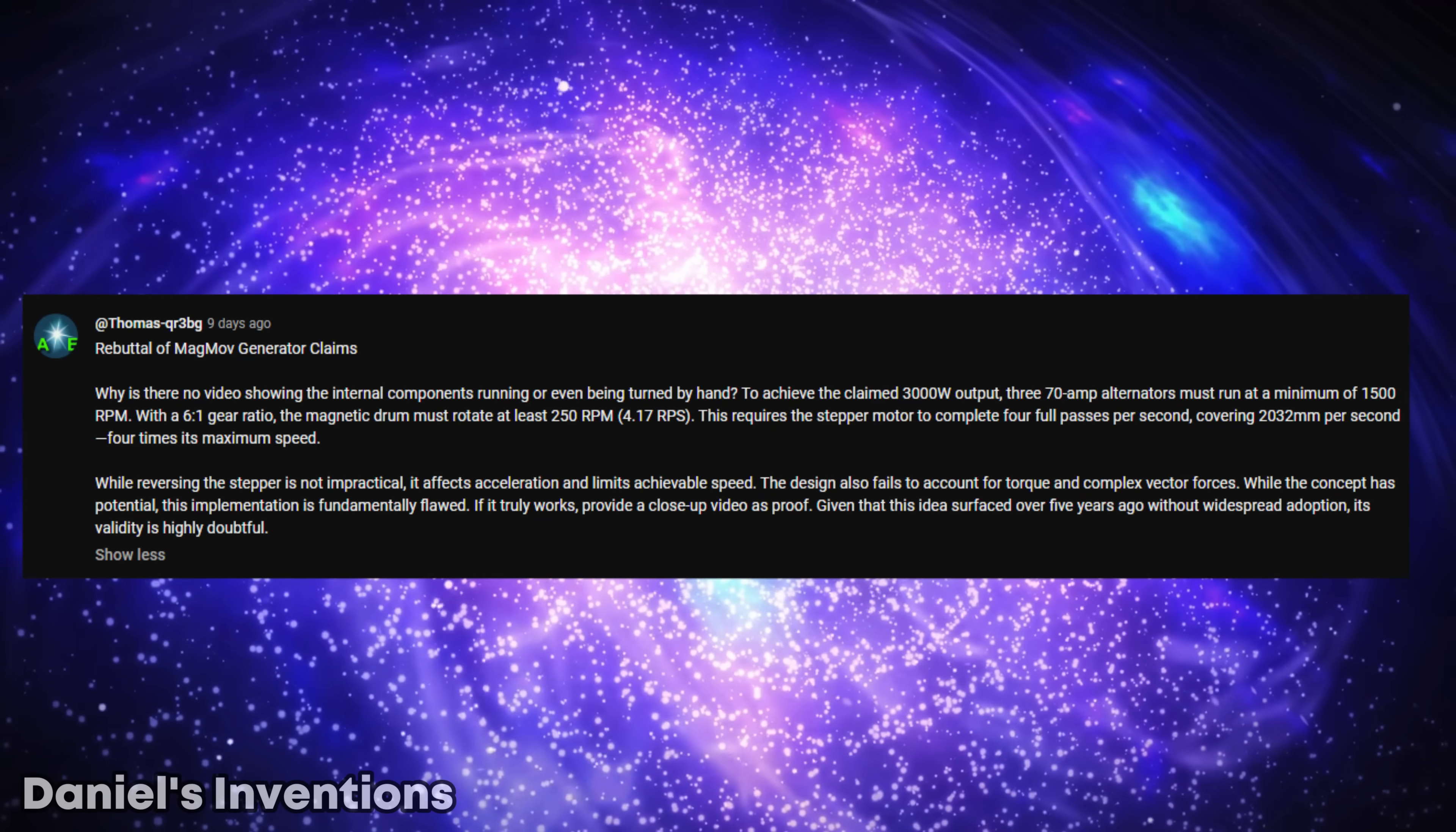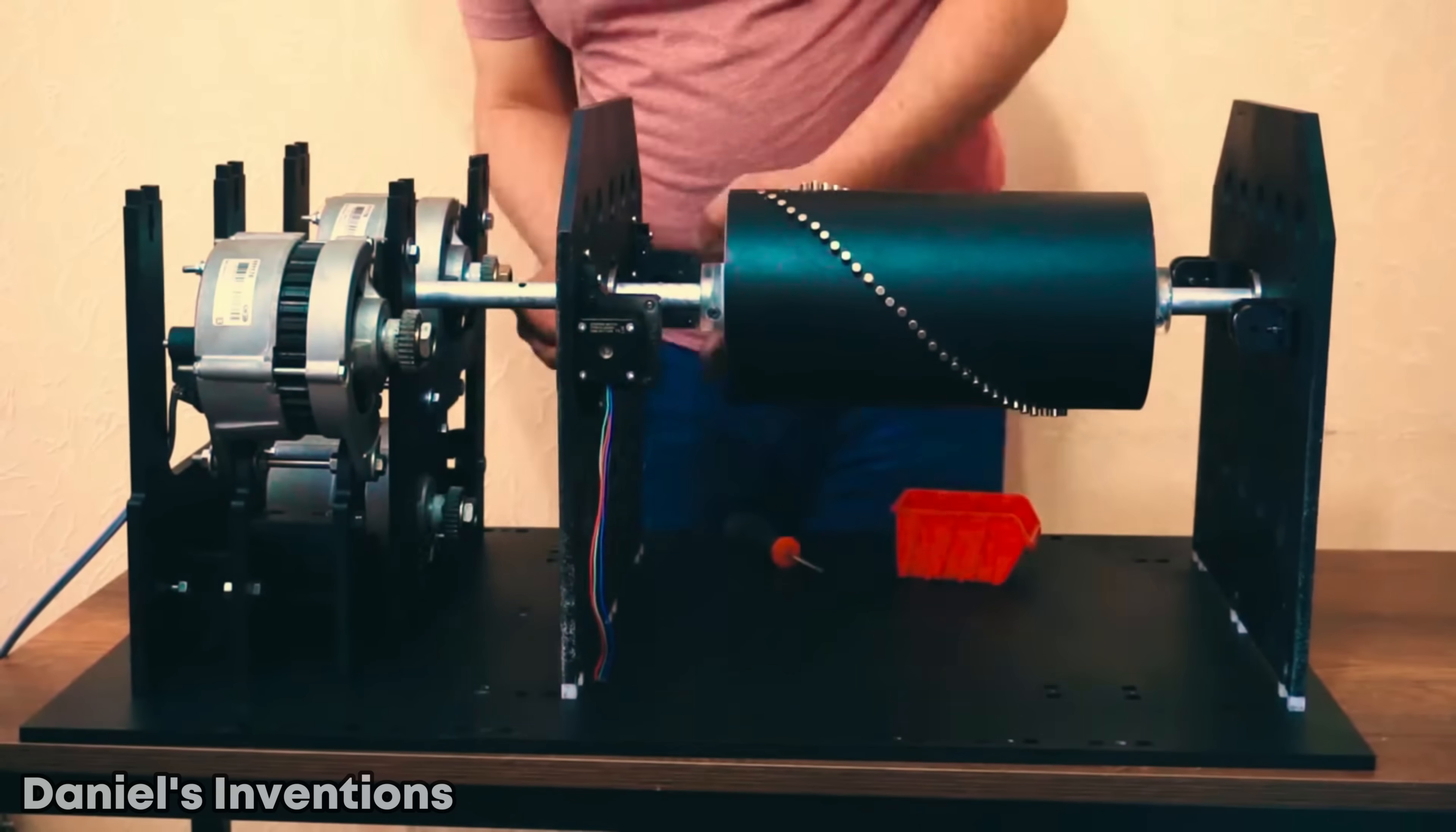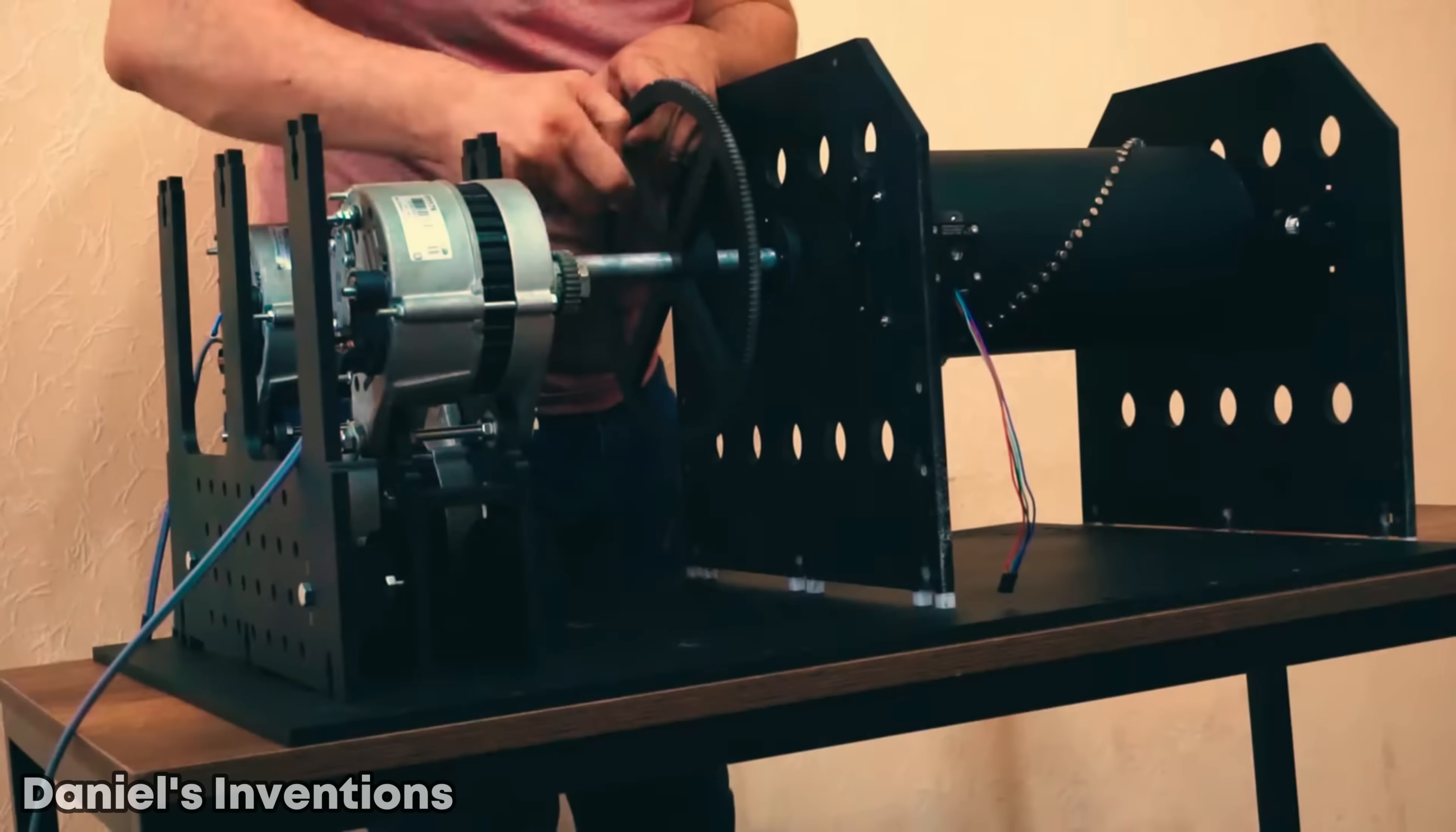A comment on the original inventor's video points out some crucial concepts. To achieve the claimed 3000 watt output, 370 amp alternators must run at a minimum of 1500 RPM. With a 6 to 1 gear ratio, the magnetic drum must rotate at least 250 RPM.